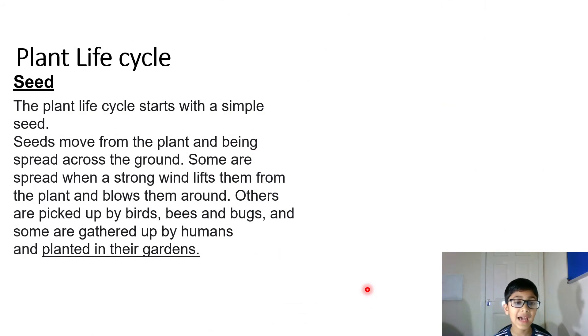The plant life cycle. Seed. The plant life cycle starts with a simple seed. Seeds move from the plant and being spread across the ground. Some are spread when a strong wind lifts them from the plant and blows them around.